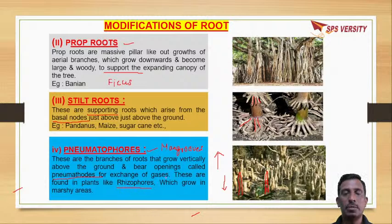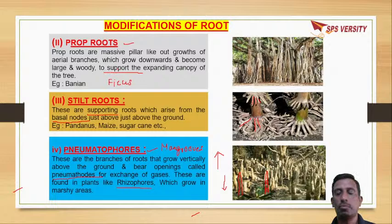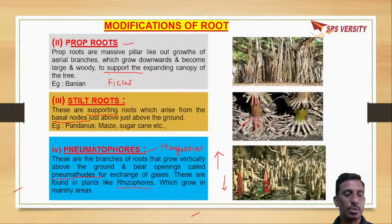So the purpose of pneumatophores is gas exchange. The purpose of stilt roots is support. The function of prop roots is giving support. Storage roots are for storage of food. These roots are performing other than normal absorption of water and minerals - they perform other specialized functions.